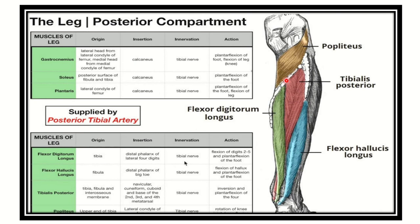Here we can see the posterior compartment of the leg with different muscle groups. The first box shows the superficial group of muscles in the posterior compartment of the leg. The superficial muscles are gastrocnemius, soleus, and plantaris — these three are the superficial compartment of the posterior compartment of the leg.